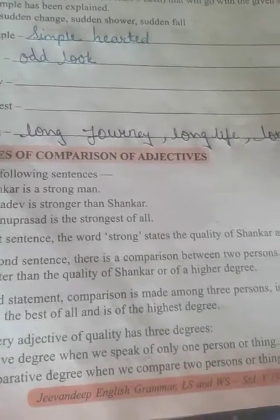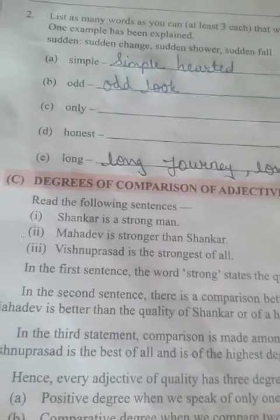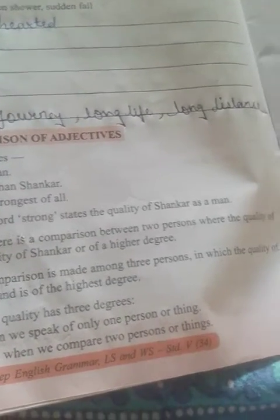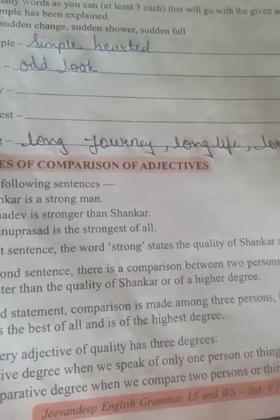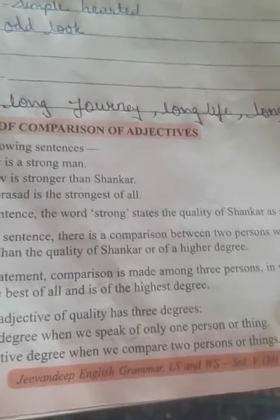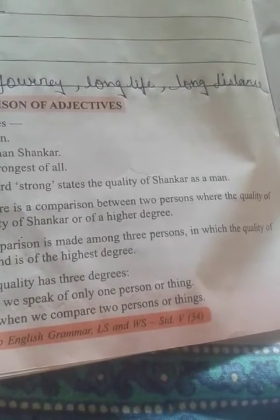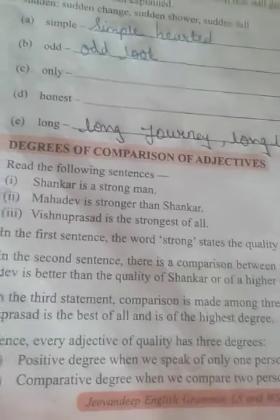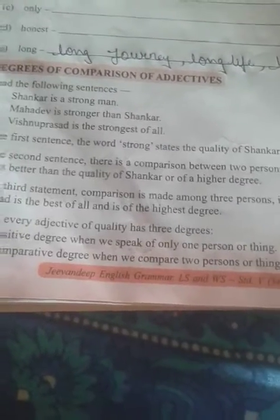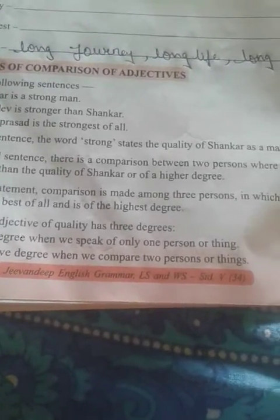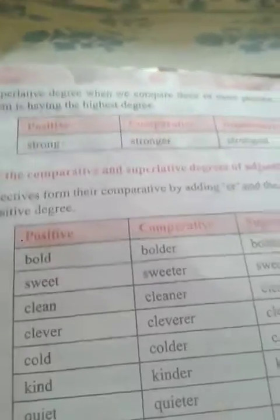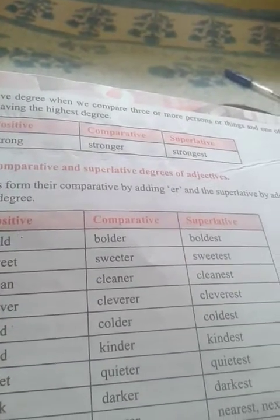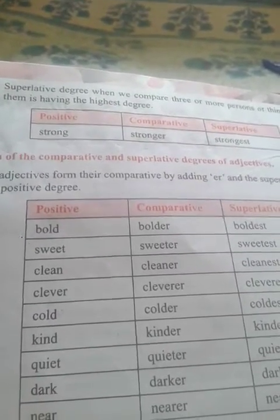In the first sentence, the word 'strong' states the quality of Shankar as a man. In the second sentence, there is a comparison between two persons where the quality of Madhav is better than — or of a higher degree than — the quality of Shankar. In the third statement, comparison is made among three persons in which the quality of Vishnu Prasad is the best of all and is of the highest degree.